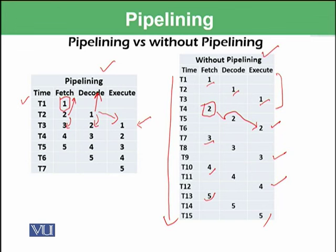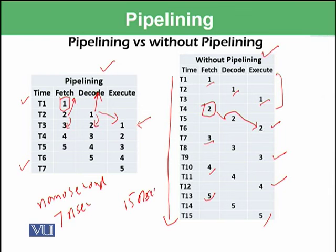In such a scenario, we finish executing all five instructions in only 7 time slots. So if time is measured in nanoseconds, pipelining requires only 7 nanoseconds, whereas without pipelining we needed 15 nanoseconds for just five instructions. In computer science, CPUs perform billions of instructions per second, so using pipelining provides enormous efficiency gains without increasing the data transfer speed — which was the claim on the previous slide.